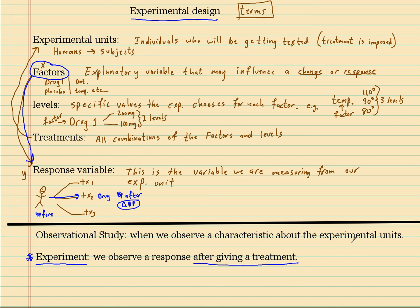The only way we can really do that is with an experiment. Here we observe a response after giving a treatment. With an observational study, we just observe something that's happened in the past about the experimental units. We're not giving a treatment in an observational study, we just observe facts that have happened in the past and measure that.